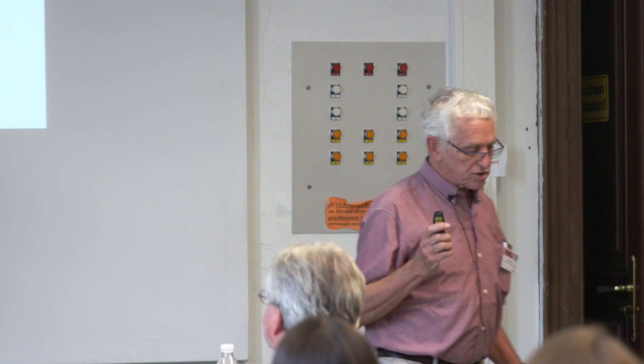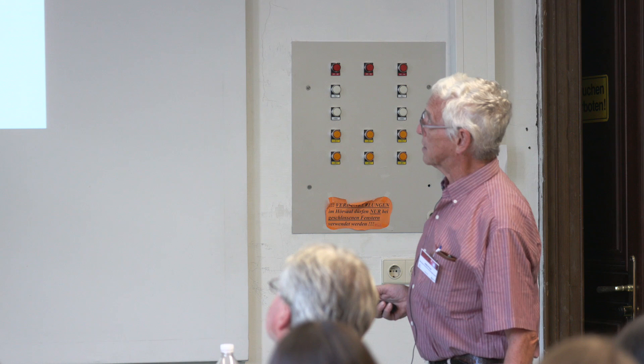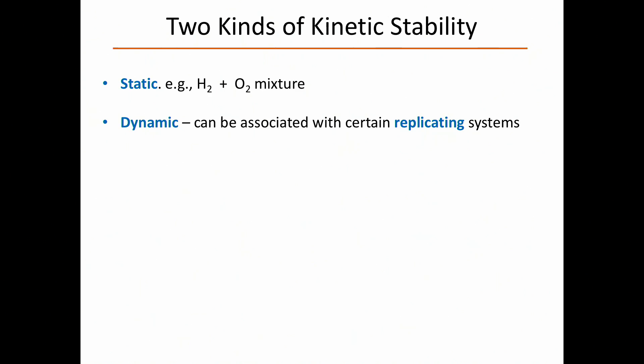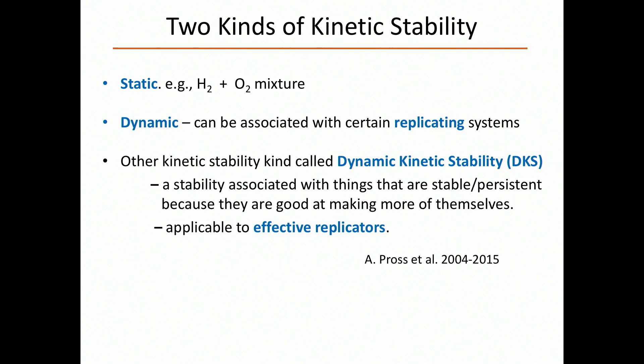It turns out there are two kinds of kinetic stability. The well-known one — static kinetic stability — is in all the textbooks. But there's a dynamic kinetic stability associated with certain replicating systems, and something can be persistent because it's good at making more of itself. Remember those cyanobacteria that have been around for several billion years? That's already a hint to where we're headed.